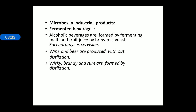Next are microbes used for industrial purposes. First are fermented beverages. Alcohol is produced by microbes through fermentation, and yeast is used for the production of alcohol and alcohol-related products. Brewery yeast is the term used for yeast that ferments juices. Saccharomyces cerevisiae is the yeast which produces alcoholic beverages. Wine and beer are produced without distillation, whereas whisky, brandy, and rum are formed by distillation.